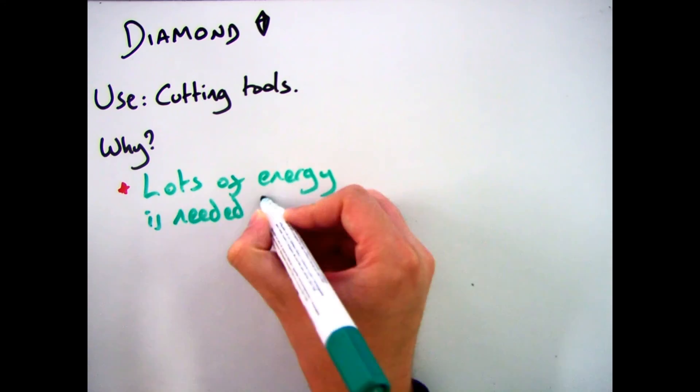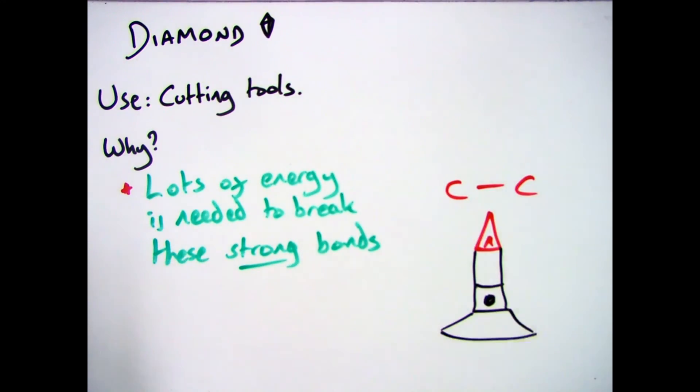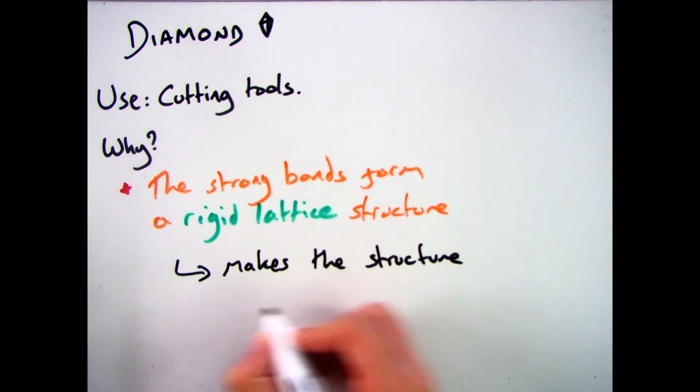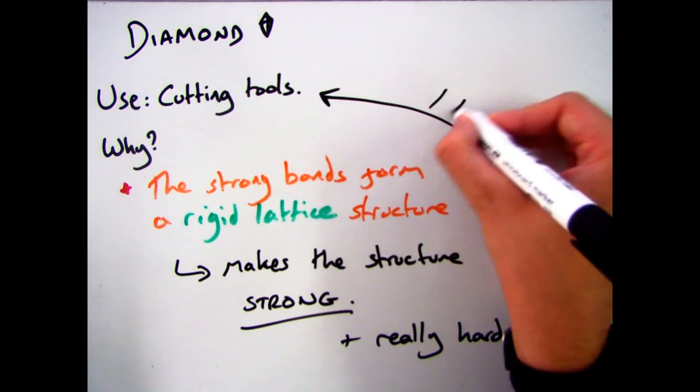Now this means that lots of energy is needed to break these strong covalent bonds. This produces what is known as a rigid lattice structure which is really strong. And if the structure is strong it makes it hard and if it's hard it's ideal for use in cutting tools.